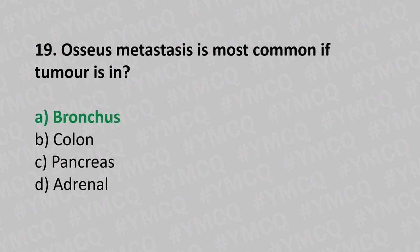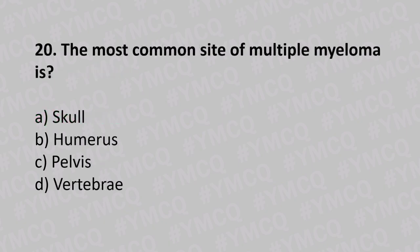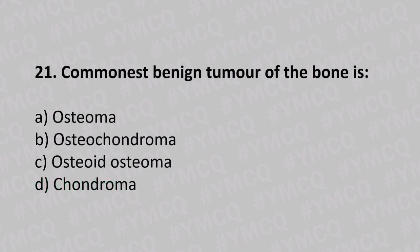Question number twenty: the most common site of multiple myeloma is option A skull, option B humerus, option C pelvis, option D vertebra. The answer is option D, vertebra.